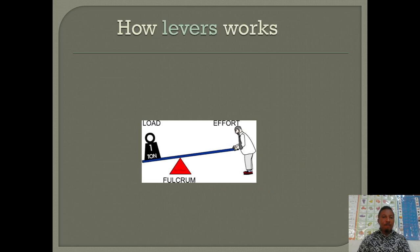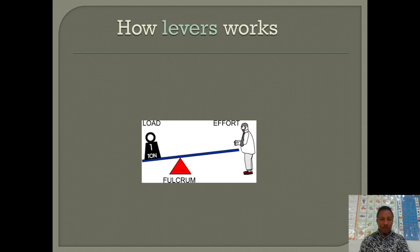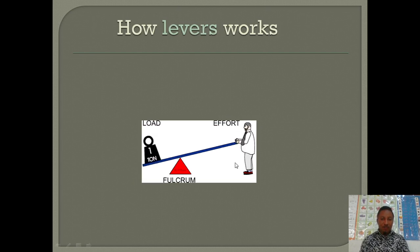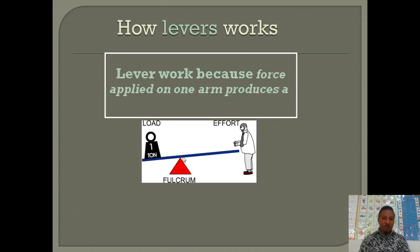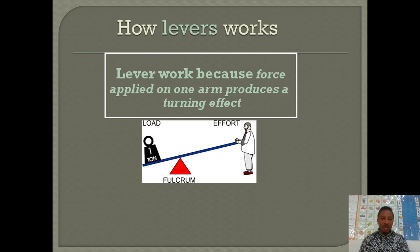The person is pushing down on the bar with a force which we call the effort. Notice that the straight bar moves about the pivot — the pivot is the point where it can turn. A lever basically works because a force applied on one arm produces what is called a turning effect. Force applied here causes the bar to turn.